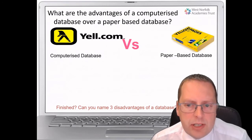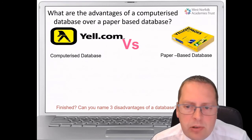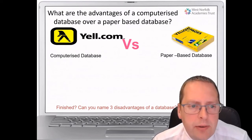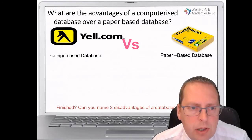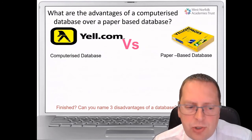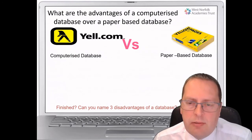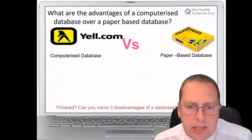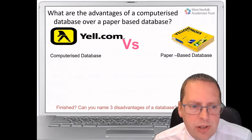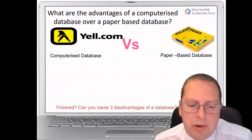We're used to using databases, but we don't really realise that we're using databases on a daily basis. If we're looking up information online — a phone number or an address — we might look in yell.com. That's a computer database. Likewise, we could look in the yellow pages for the same information. It's generally acknowledged that the computer database is a much better version of a paper-based database. If you can write three advantages and three disadvantages, that would be brilliant.